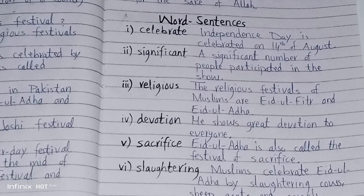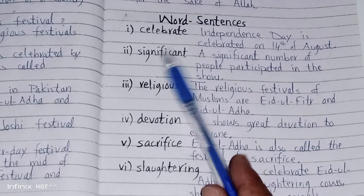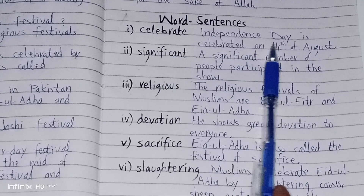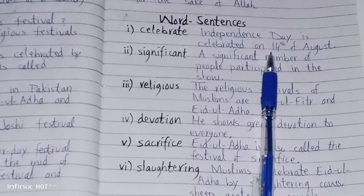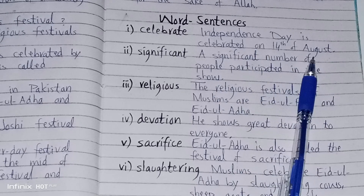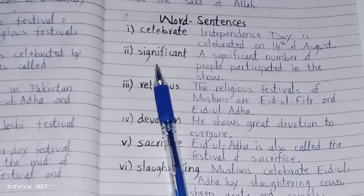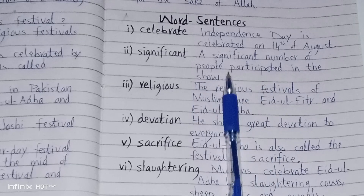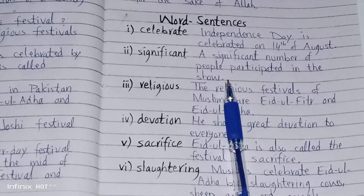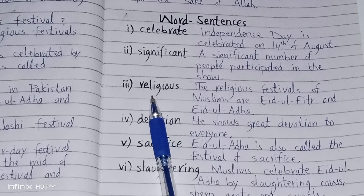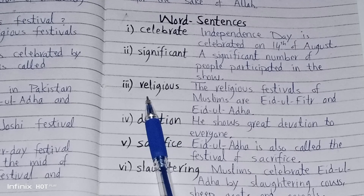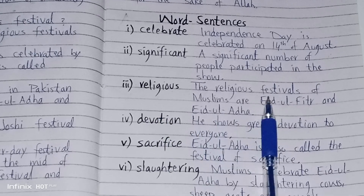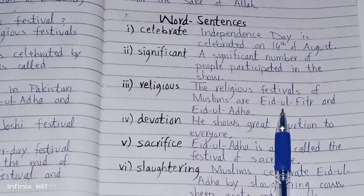Now, word sentences. First word: celebrate — Independence Day is celebrated on the 14th of August. Next word: significant — a significant number of people participated in the show. Next word: religious — the religious festivals of Muslims are Eid ul Fitr and Eid ul Adha.